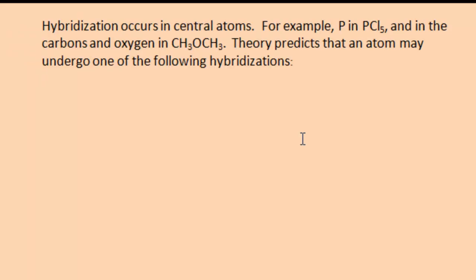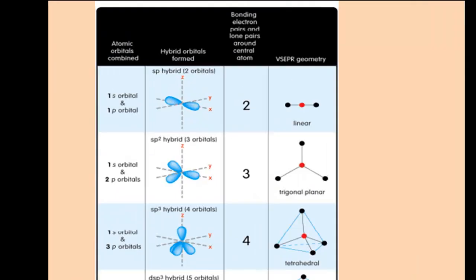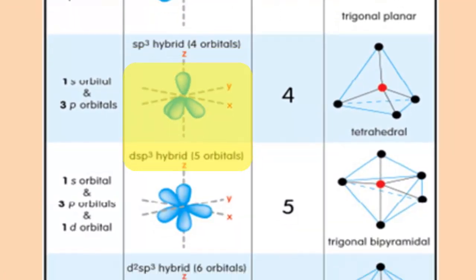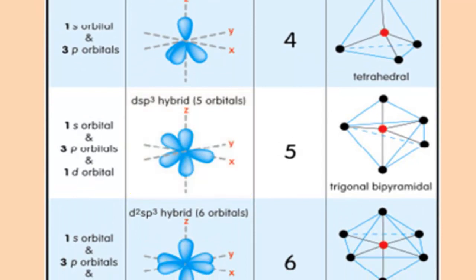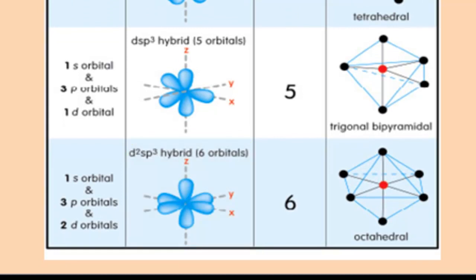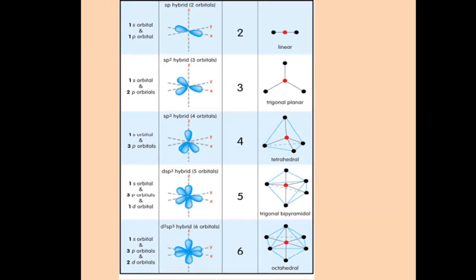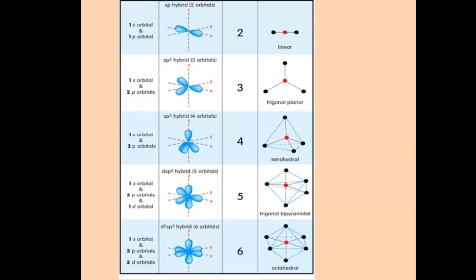The theory predicts that an atom may undergo one of the following hybridizations: sp, sp2, sp3, dsp3 (sometimes called sp3d), d2sp3 (also called sp3d2). The name of the hybrid orbitals — sp, sp2, etc. — indicates which atomic orbitals underwent hybridization. For example, an sp hybrid orbital is formed from one s and one p orbital hybridizing, while an sp2 hybrid orbital forms from one s atomic orbital and two p atomic orbitals — that is, quantity 2p, not the electron configuration 2p.